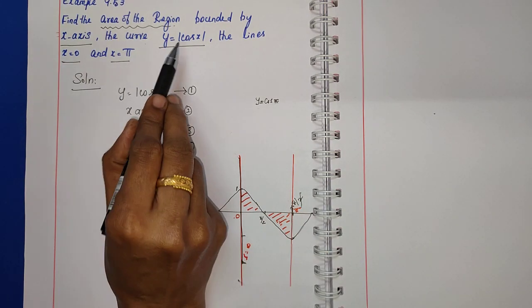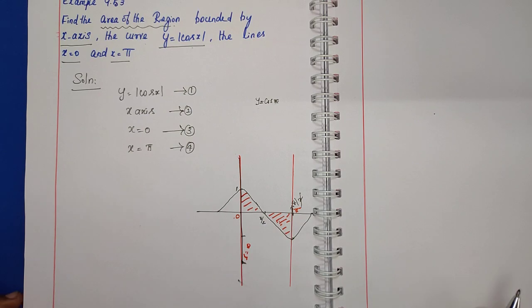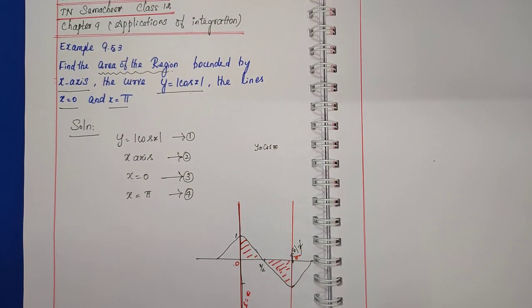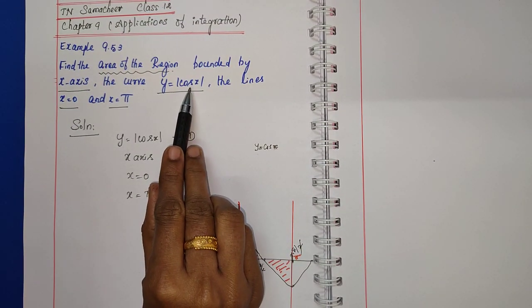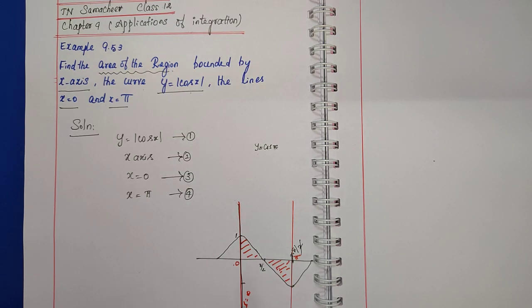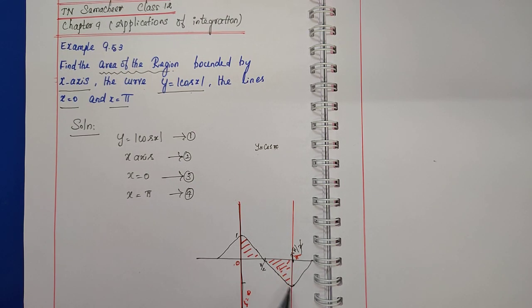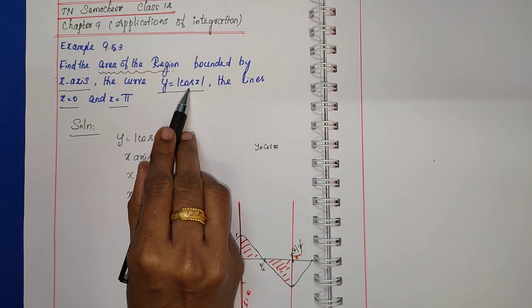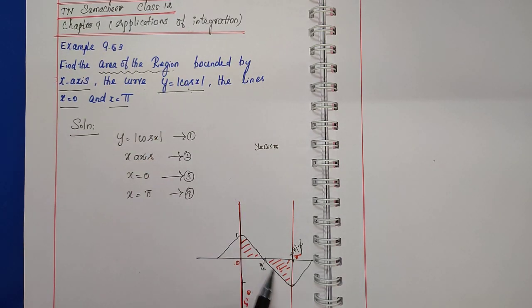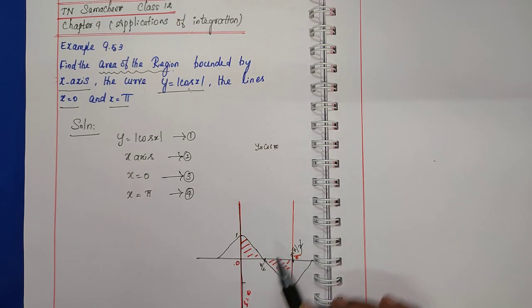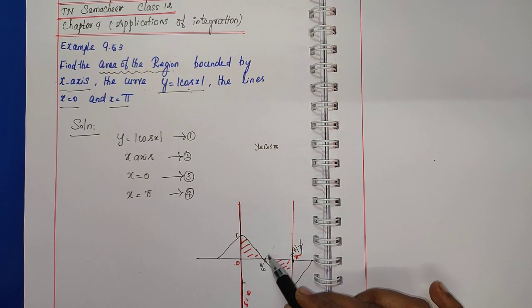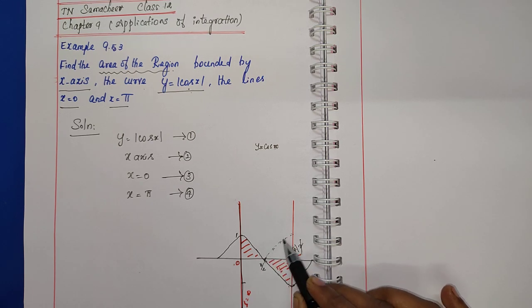Our function is y is equal to modulus cos x. From 0 to pi by 2, the cos x graph is positive. From pi by 2 to pi, cos x is negative, but since our function is modulus cos x, the negative value becomes positive, so the curve comes back above the x-axis.